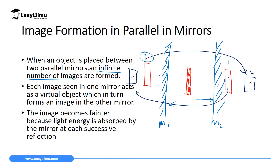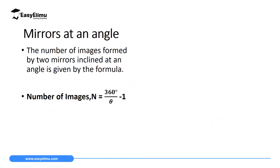Another thing you will observe is that the images formed will be faint — they will not be very clear, and they become fainter as you move away from the mirror. The reason they become faint is because of successive reflection: each reflection absorbs some light energy, so the intensity and clarity of the image reduces with each successive reflection.